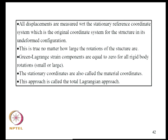Some observations: all displacements are measured with respect to the stationary reference (original undeformed) coordinate system, regardless of how large the rotations are. The Green-Lagrange strain components are zero for all rigid body motions, whether small or large. These stationary coordinates are also called material coordinates, and this approach is called the Total Lagrangian formulation.